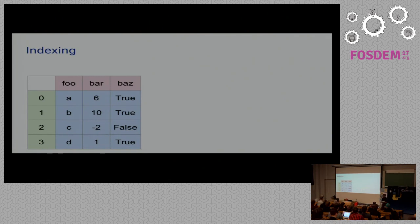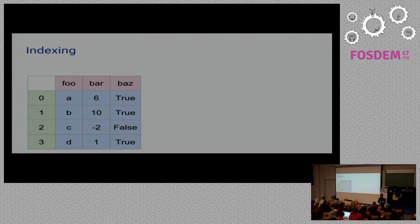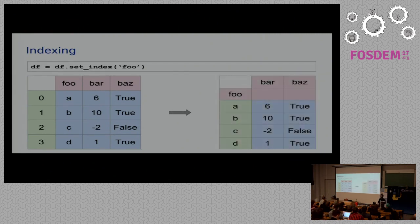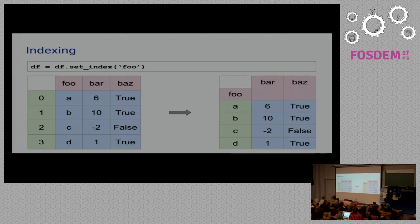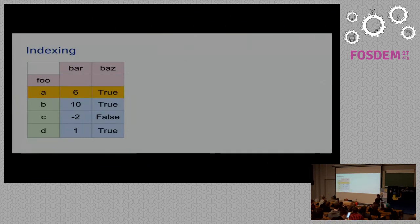We can change the index and assign a column as the index — just like in databases where you define a column as index to make searching and sorting easy. We can do the same here by passing the name of the column we want as index. The new data frame will have that column as index, so everything will be done using values A, B, C, and D.